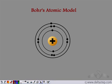Bohr had given his atomic model, according to which the entire mass of the atom was concentrated in the nucleus, because the mass of electrons is negligible as compared to the mass of protons. So the entire mass of the atom is present in the nucleus, as the protons are present in the nucleus of the atom.